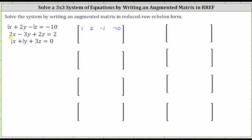The second row is 2, negative 3, 2, 2. And the third row is 1, 1, 3, 0.